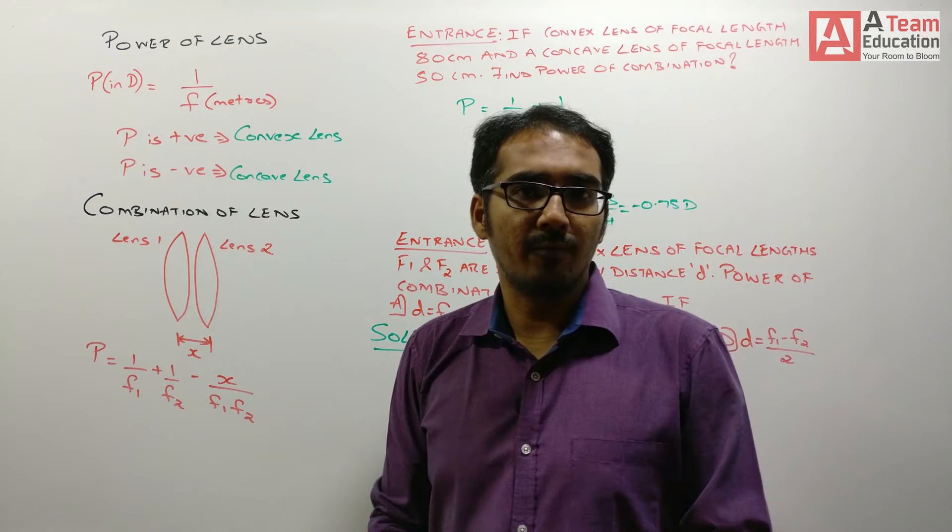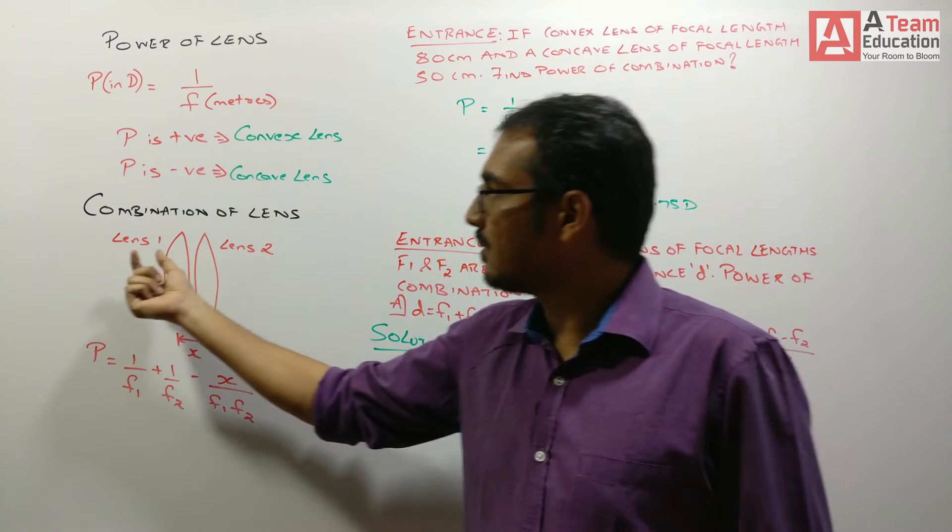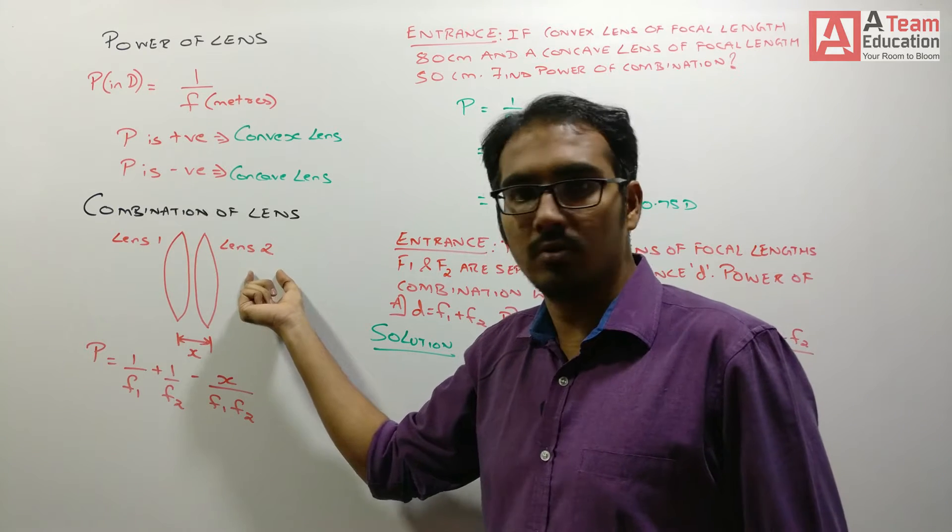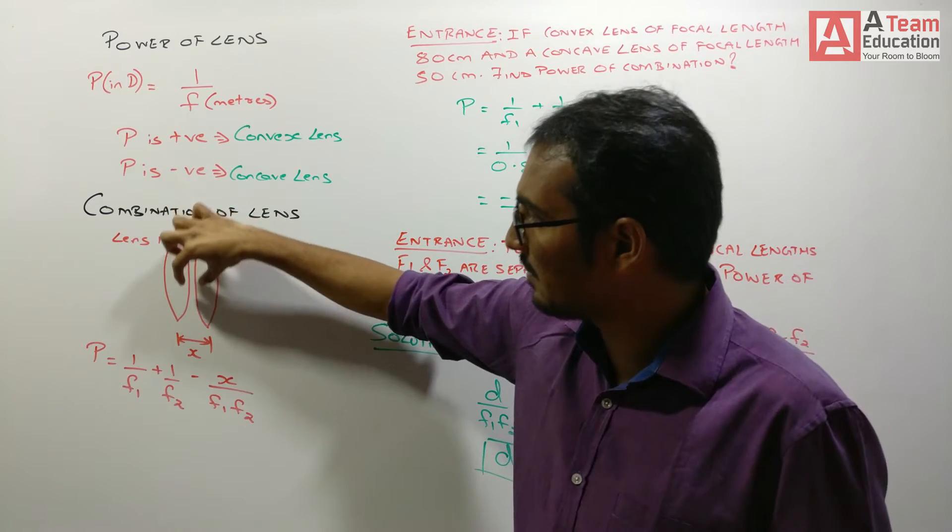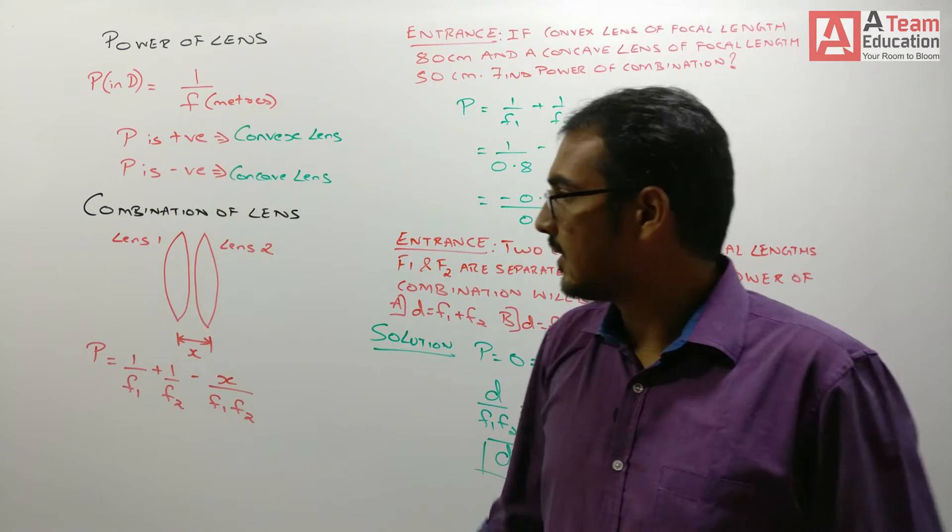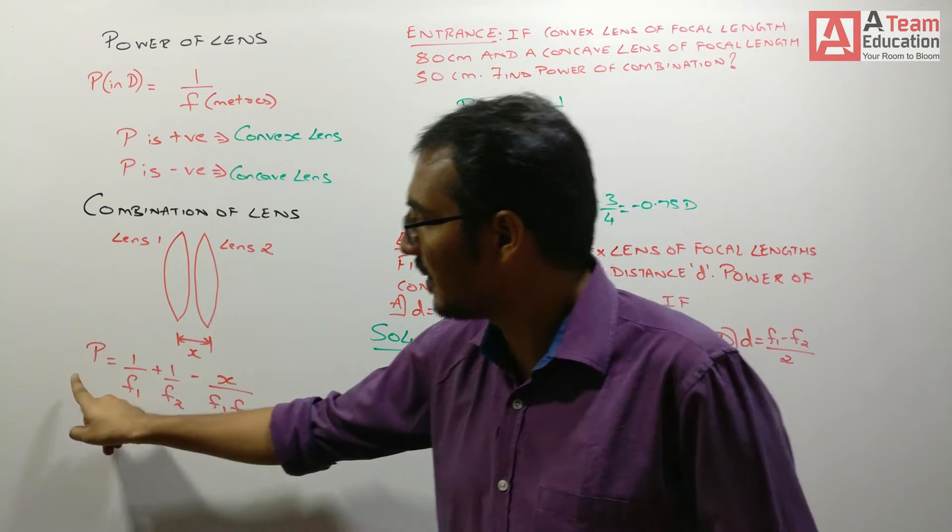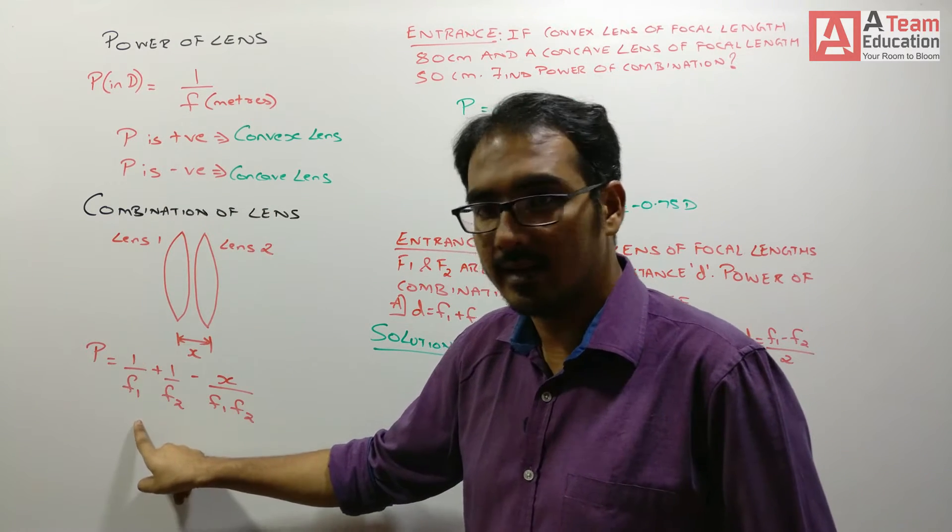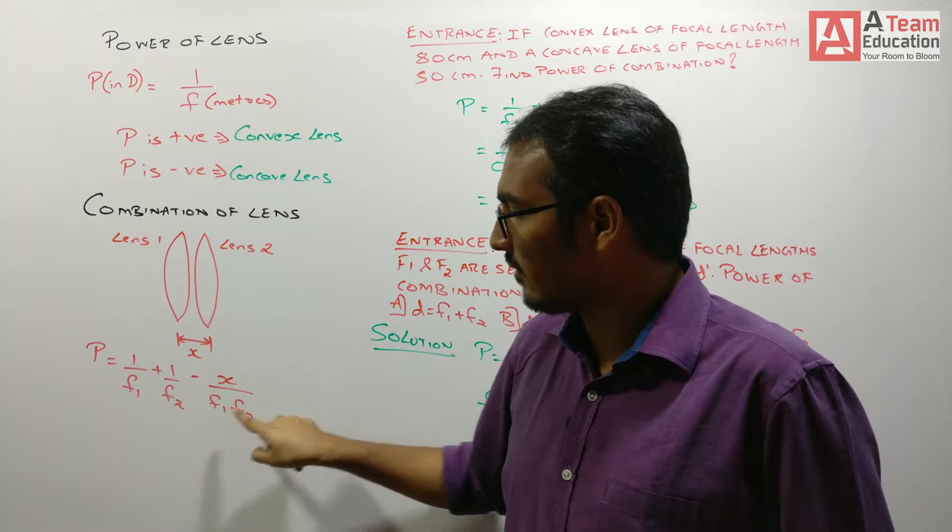What could be advanced kind of problems in this? Basically you could have combination of lenses. For example, if you have lens 1, lens 2 and they are separated by a distance x. What would be the power of combination? The power of combination of lens would be P equals 1 upon f1 plus 1 upon f2 minus x upon f1 f2.